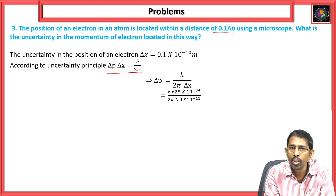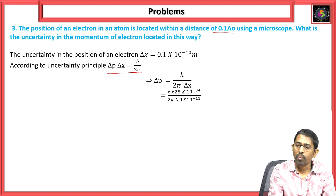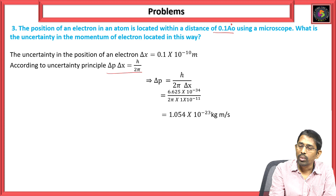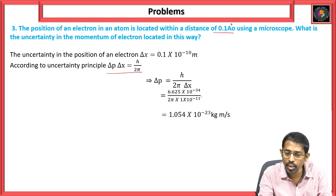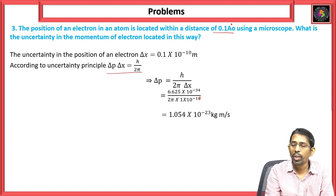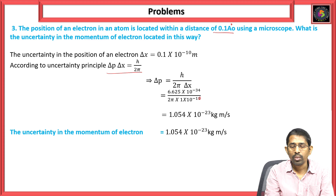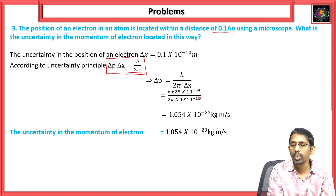We know h = 6.625 × 10⁻³⁴ and delta x = 1 × 10⁻¹⁰. Substituting these values and simplifying, we get delta p = 1.054 × 10⁻²³ kg·m/s. From the uncertainty principle delta p · delta x = h / 2π, we can find the momentum of the electron.